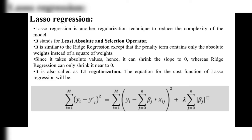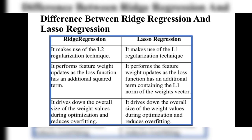Since lasso regression takes absolute values, it can shrink the slope all the way to zero, whereas ridge regression can only shrink it near to zero. Ridge regression requires at least one non-zero input value, but lasso regression can reduce coefficients to exactly zero. Lasso regression is also called L1 regularization, and its cost function formula differs from ridge regression in that respect.